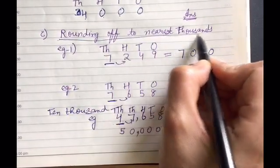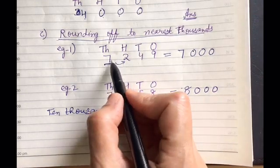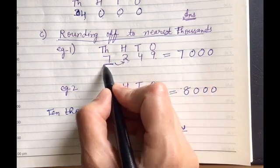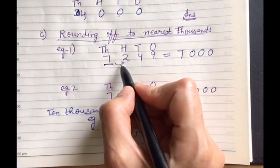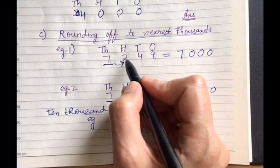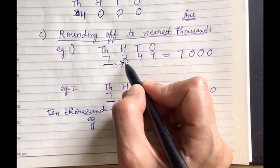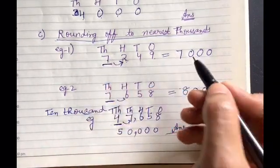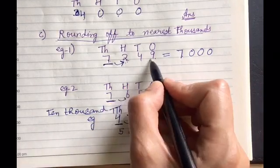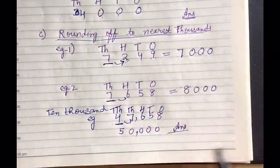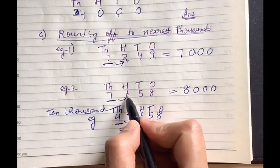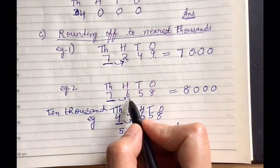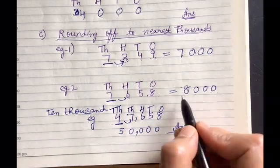Rounding off to the nearest thousand: take the example of 7249. Underline the digit at the thousands place and check the digit to its right — it is less than 5, so no change to the thousands digit; it stays 7 and the rest become 0. In another example where the right digit is greater than 5, the thousands digit increases by 1 — so 7 becomes 8 — and the rest are 0, giving 8000.